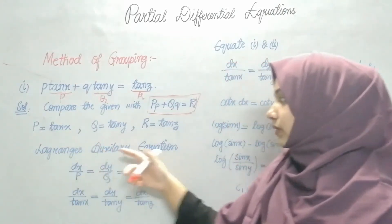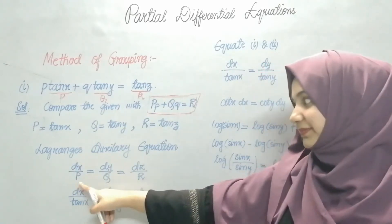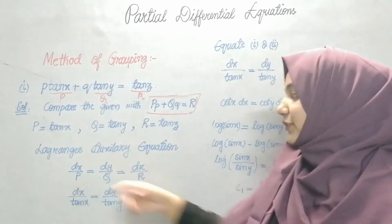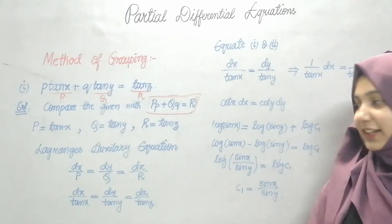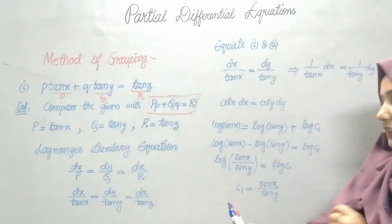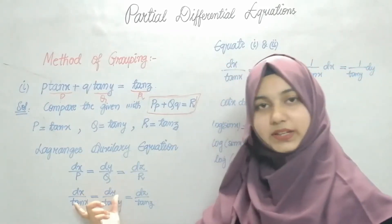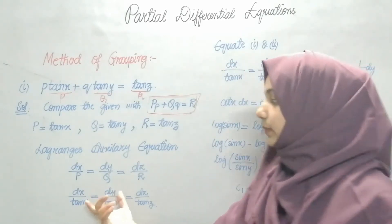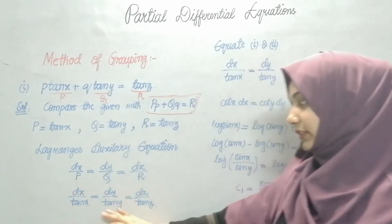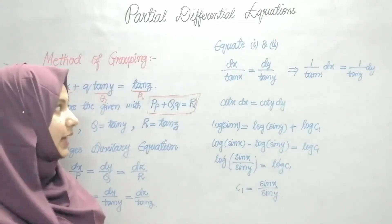Now the Lagrange's auxiliary equation is dx/P = dy/Q = dz/R. Substituting the values of P, Q, R: dx/tan x = dy/tan y = dz/tan z. Next, I need to take any two members and solve them. I will take the dx and dy terms — equating members 1 and 2: dx/tan x = dy/tan y.